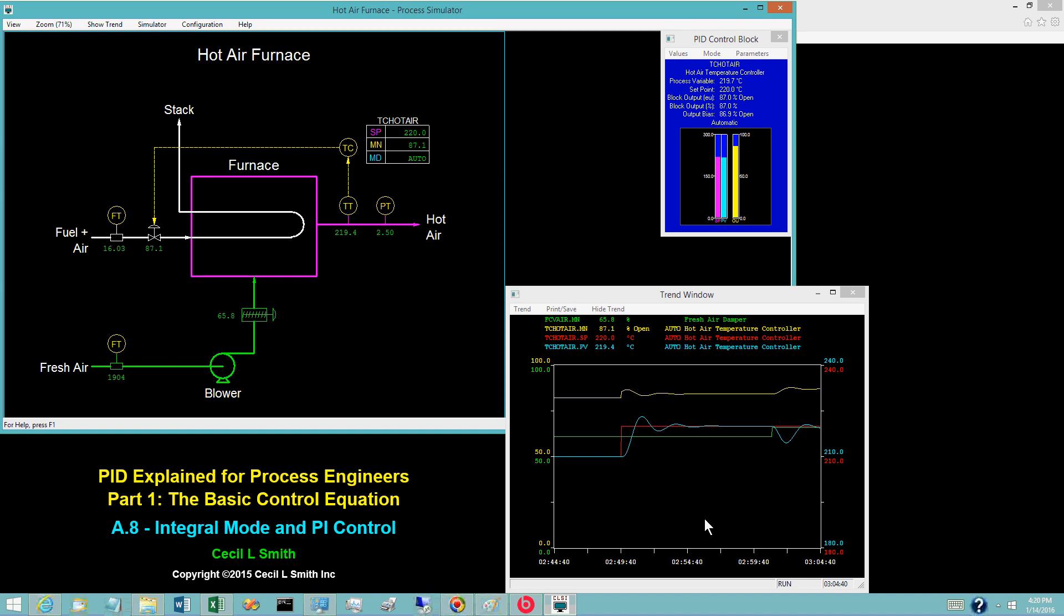This introduces a disturbance in the form of increased air flow or demand, which causes the hot air temperature to initially drop.